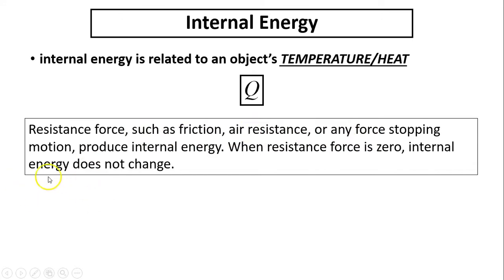So resistance forces such as friction, air resistance, or any other stopping force will produce internal energy. Such as when a car is driving, then you have to put on the brake to stop it. In that case, that kinetic energy when the car is in motion is converted into internal energy. So the car becomes hot.